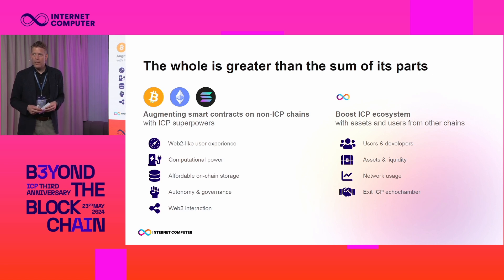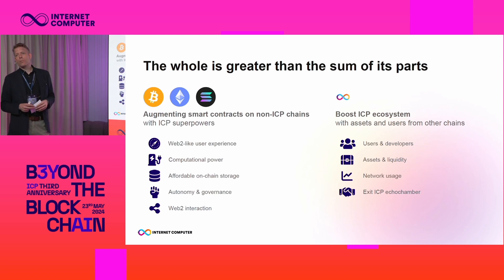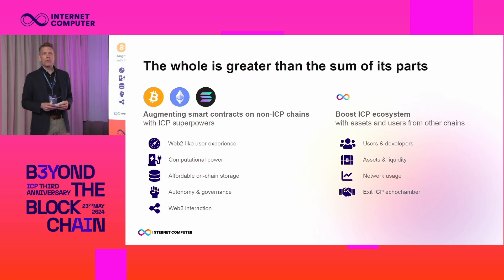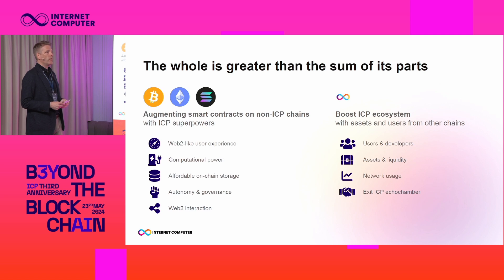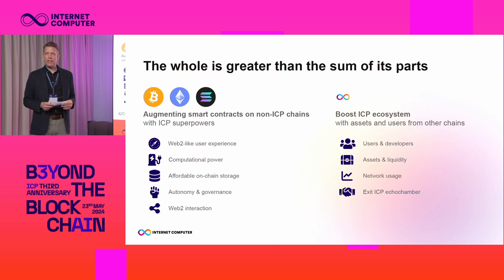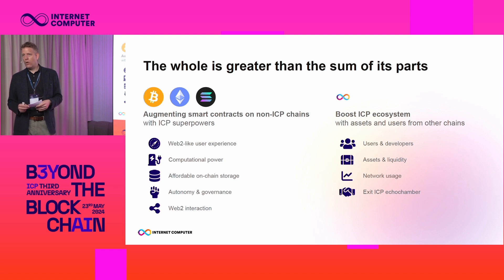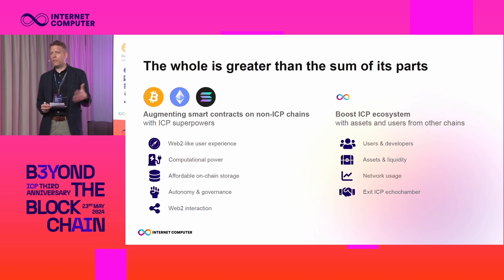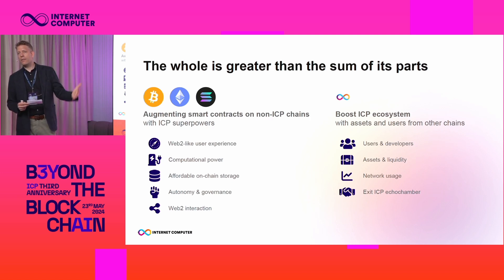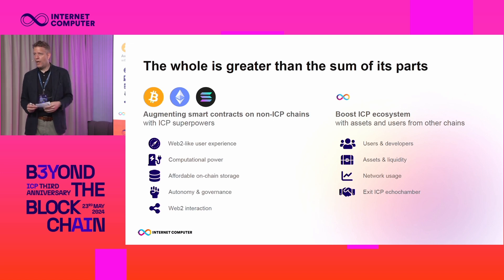I want to mention a few of these ICP superpowers. Smart contracts on ICP can serve web assets, which allows you to build decentralized front ends for smart contracts on other blockchains using ICP technologies. Developers can also offload heavy compute or storage needs to ICP smart contracts without compromising on decentralization. You can use simple primitives on ICP such as timers or randomness to turn smart contracts on other blockchains truly autonomous.